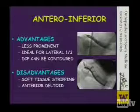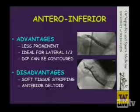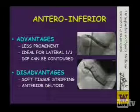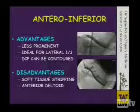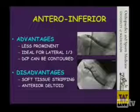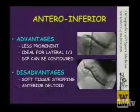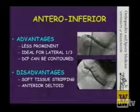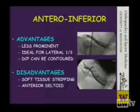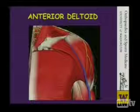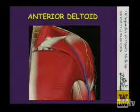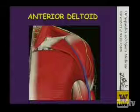The anterior-inferior plate became more popular in the last 10 years, largely because it's ideal for the lateral third, though we've applied it to other injuries as well. It is less prominent and ideal for the DCP because it can be contoured through the plate holes to accommodate the S-shaped curve from the front. The disadvantages are that it is a soft tissue stripping procedure with respect to the anterior deltoid, and you have to recognize that may change your rehab protocol afterwards.